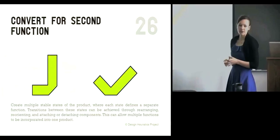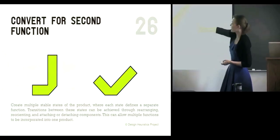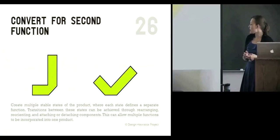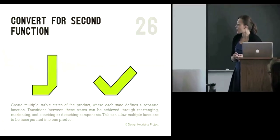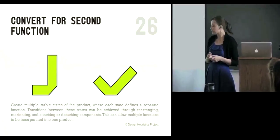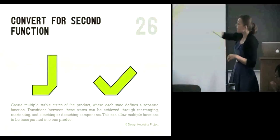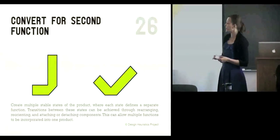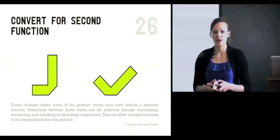Let's do one more. This card is 'Convert for Second Function.' The description reads: 'Create multiple stable states of the product where each state defines a separate function. Transitions between these states can be achieved through rearranging, reorienting, and attaching or detaching components. This can allow multiple functions to be incorporated into one product.' Let's stay with chairs — think about a way you could convert a standard seating device to have a second function. Take a couple of minutes, talk with your neighbor, and come up with an idea or two.